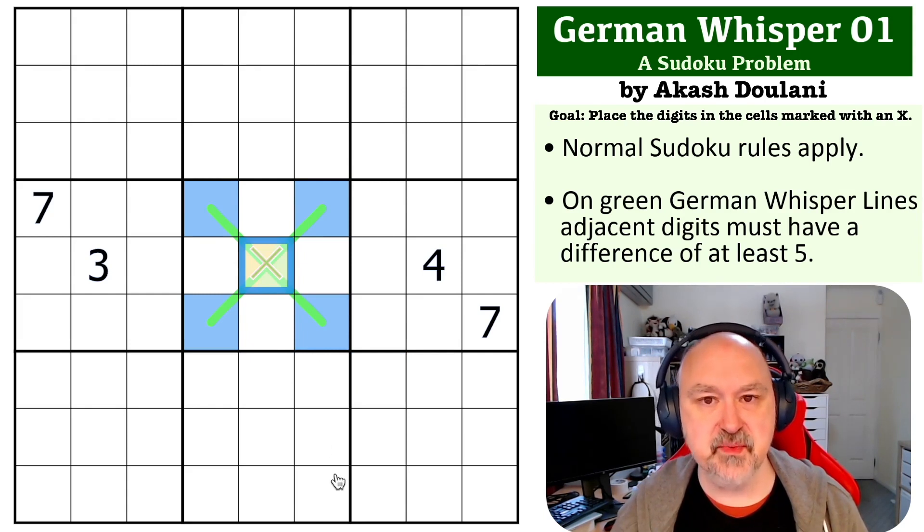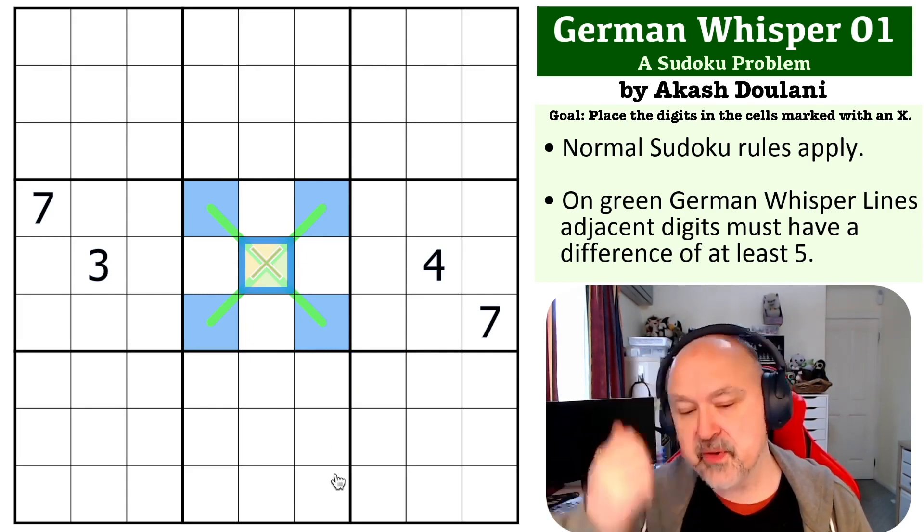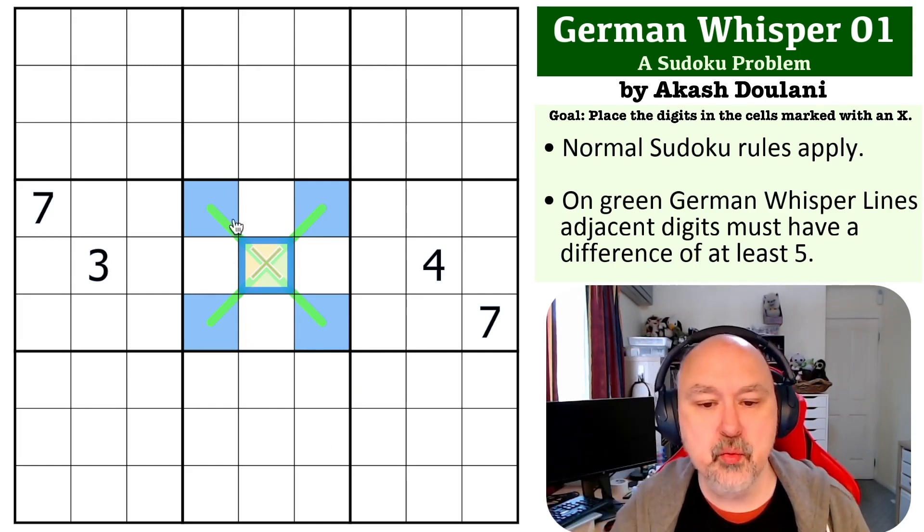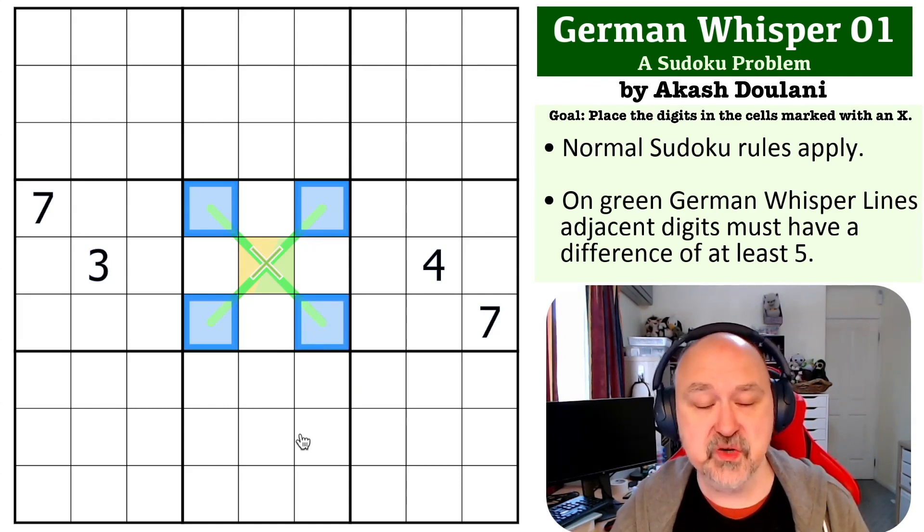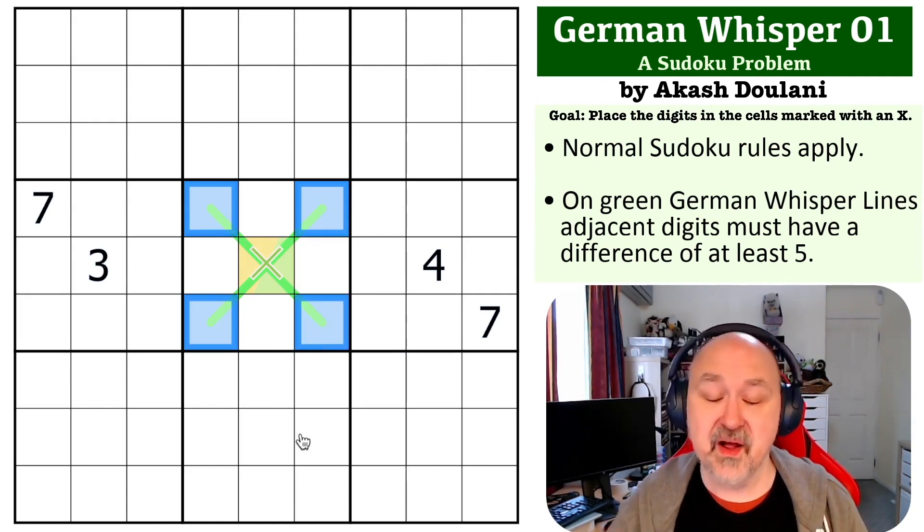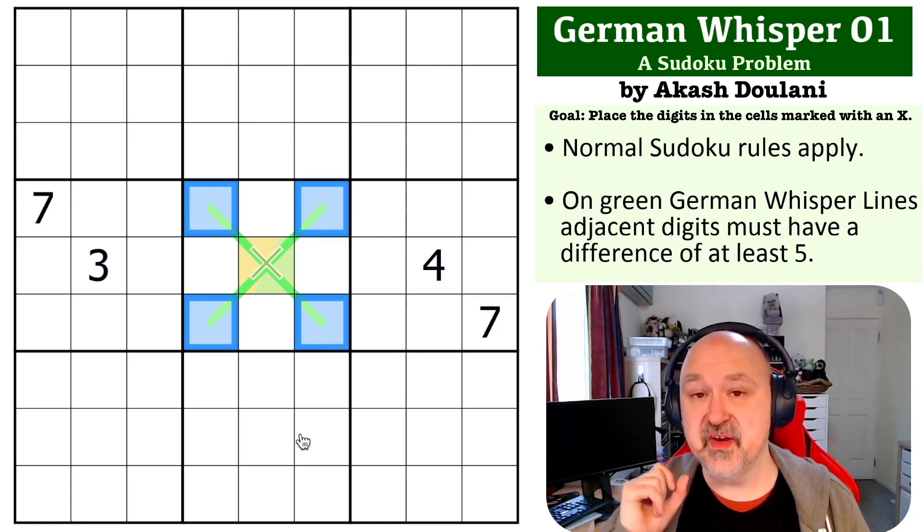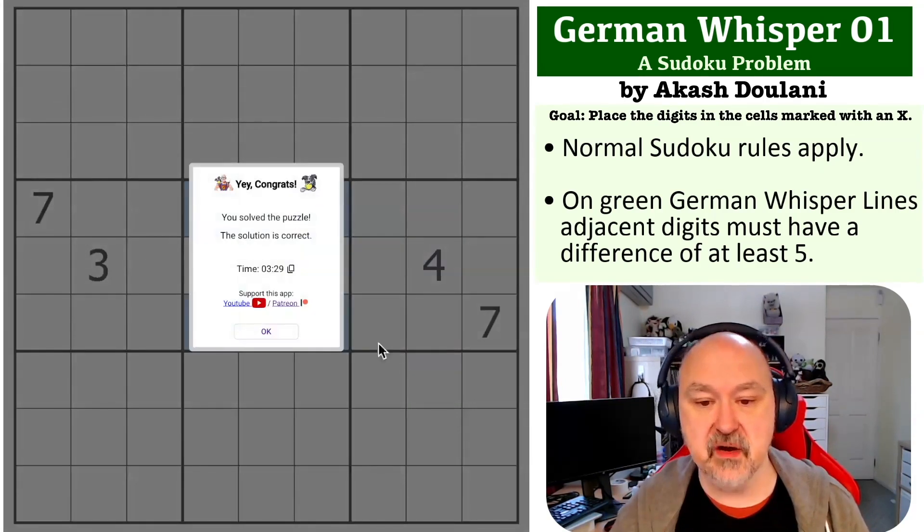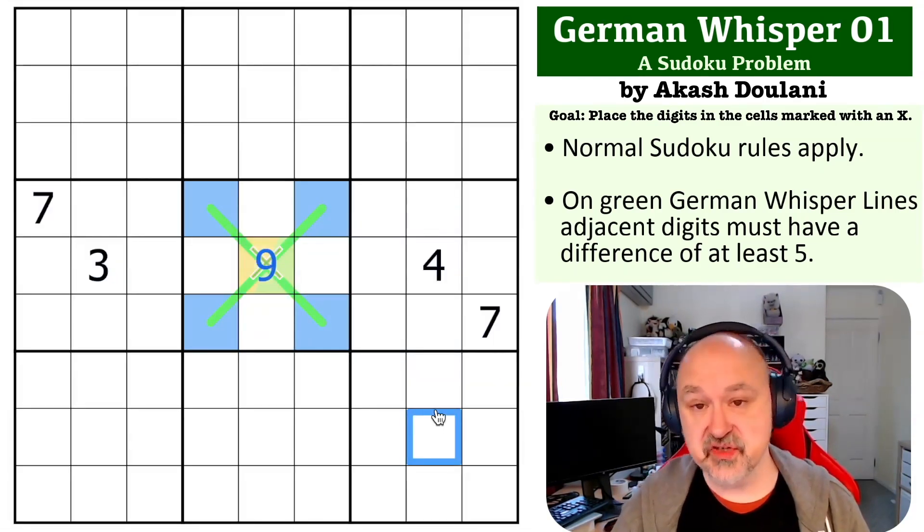So the central digit must be from six, seven, eight, or nine. But because of the five difference, we know one of these digits has got to be a four. We don't know which one, but one of them has to be a four. And there's only a single digit that is five away from four when you include one to nine. So the central digit must be the nine. And that is the solution to this.